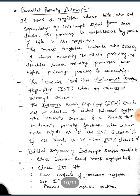The priority encoder is a circuit that implements the priority function. When one or more inputs are 1, IST is set to 1; if all inputs are 0, IST is cleared to 0. The initial sequence of the interrupt service routine is: clear lower-level mask register bits, clear the first bit, save the contents of processor registers, set IEN to 1, and proceed with the service routine.